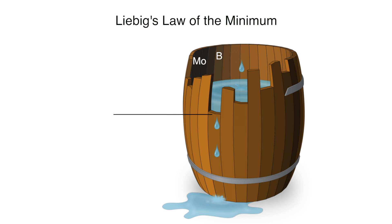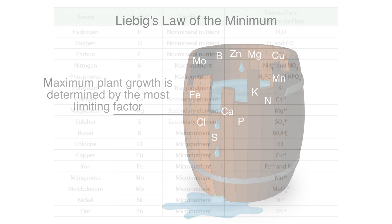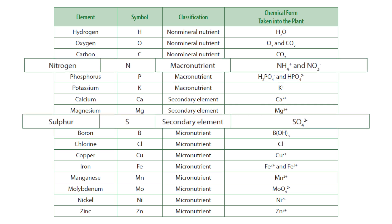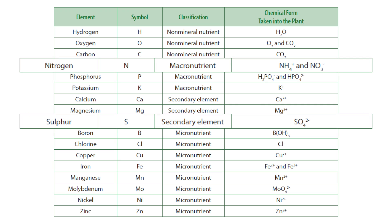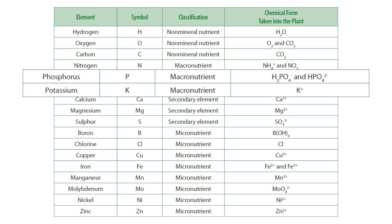Plants need a variety of essential nutrients to be supplied in different amounts and in the right balance to support healthy growth. The role of each of the 17 essential nutrients is unique, and one nutrient can't substitute for another. However, there are still some similarities between some of them — for example, between nitrogen and sulfur, and between phosphorus and potassium.